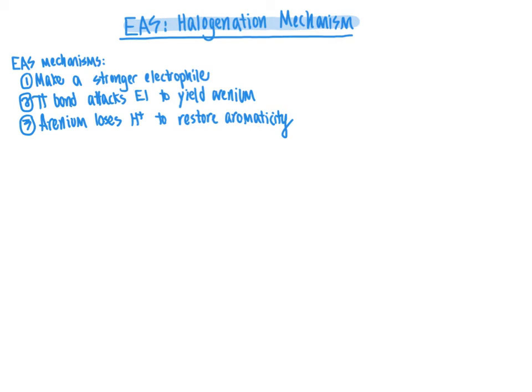Let's take a look at this for the specific instance of halogenation, with chlorine or bromine being the two main halogens suitable for this type of reaction. Iodine and fluorine generally are not going to be suitable for effective reactions like this.